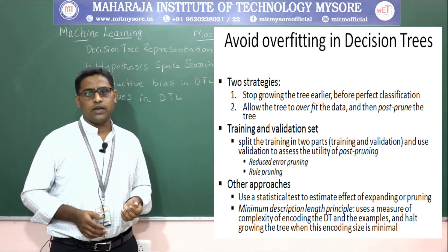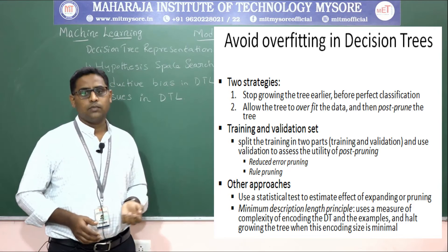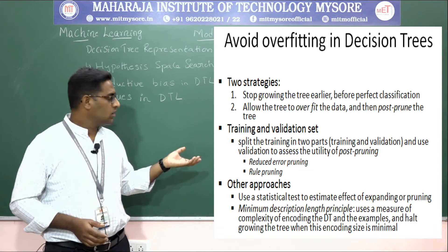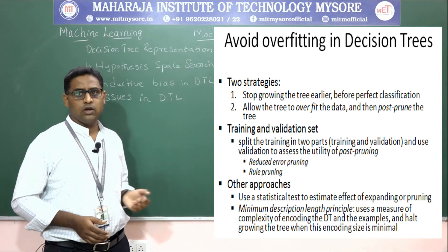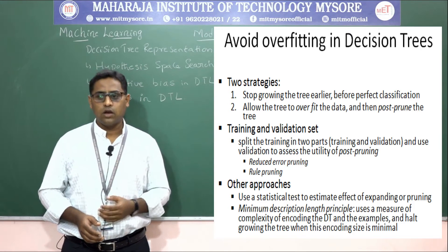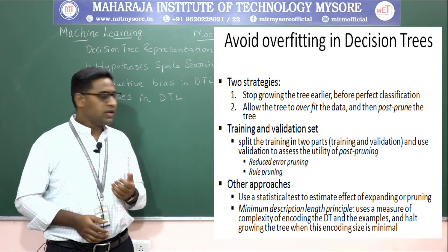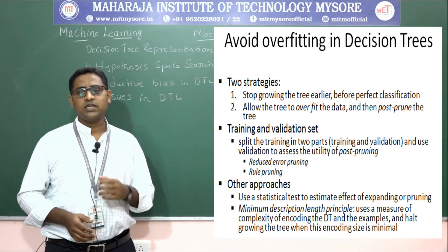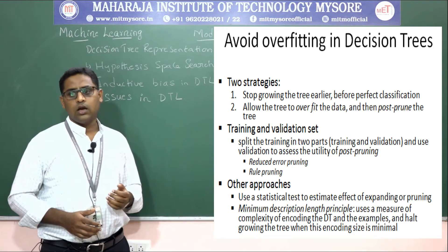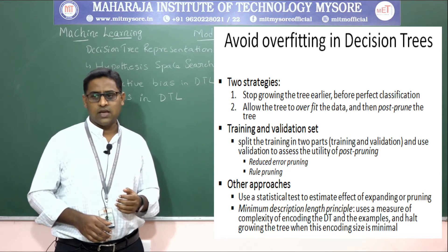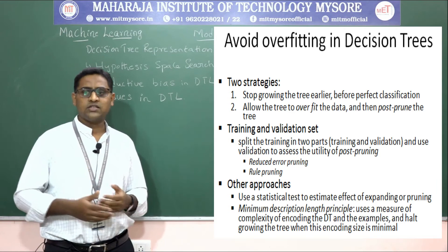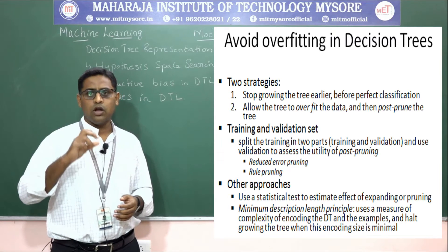Post-pruning has two approaches: reduced error pruning and rule pruning. Other approaches include using statistical tests to estimate the effect of expanding or pruning, and the minimum description length principle, which uses a measure of the complexity of encoding both the decision tree and the examples, halting when the encoding size is minimal.